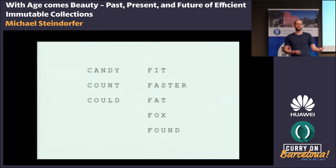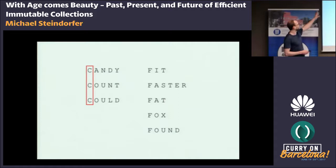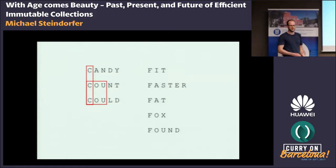On the left, we have three words that all start with the letter C. The Trie data structure accounts for the fact that they have a common prefix. Further on, two of the words have a longer prefix — they start with the three letters C-O-U. The same accounts for the words on the right: all of them start with F, some have a bit longer prefix, and some have yet another longer prefix.